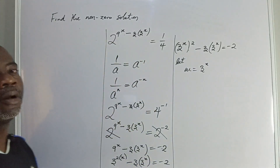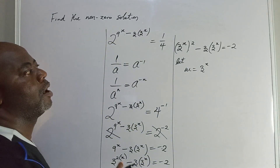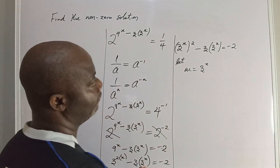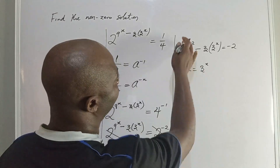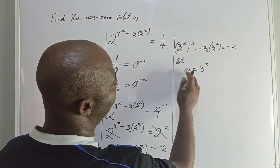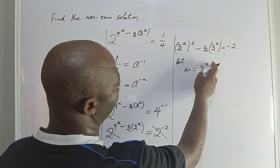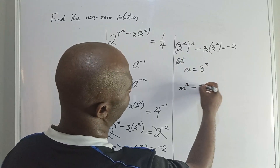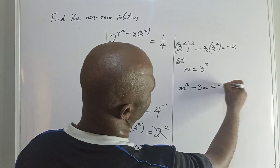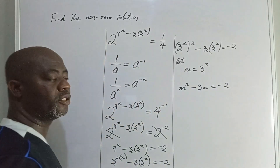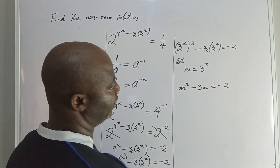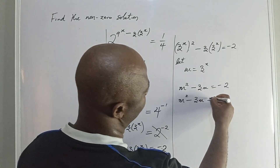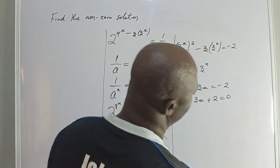We make a substitution to simplify the process and lead us to the final result. So if m equals 3 to the power of x, this equation becomes m squared minus 3m equal to minus 2. We then transform this into a quadratic equation: m squared minus 3m plus 2 equal to 0.